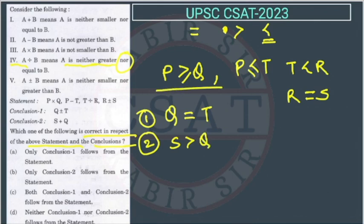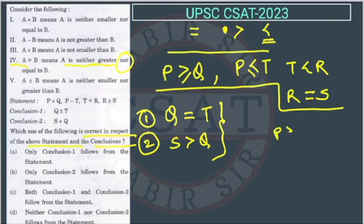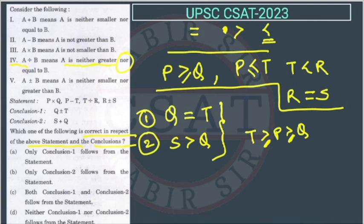We need to verify these conclusions from the statements. For Conclusion 1, we find the relation between Q and T using: P ≥ Q and P ≤ T. It is possible that P equals Q and P equals T, making Q equal to T — but this is not always the case. Since it is only possible in some cases and not certain, Conclusion 1 cannot be confirmed.